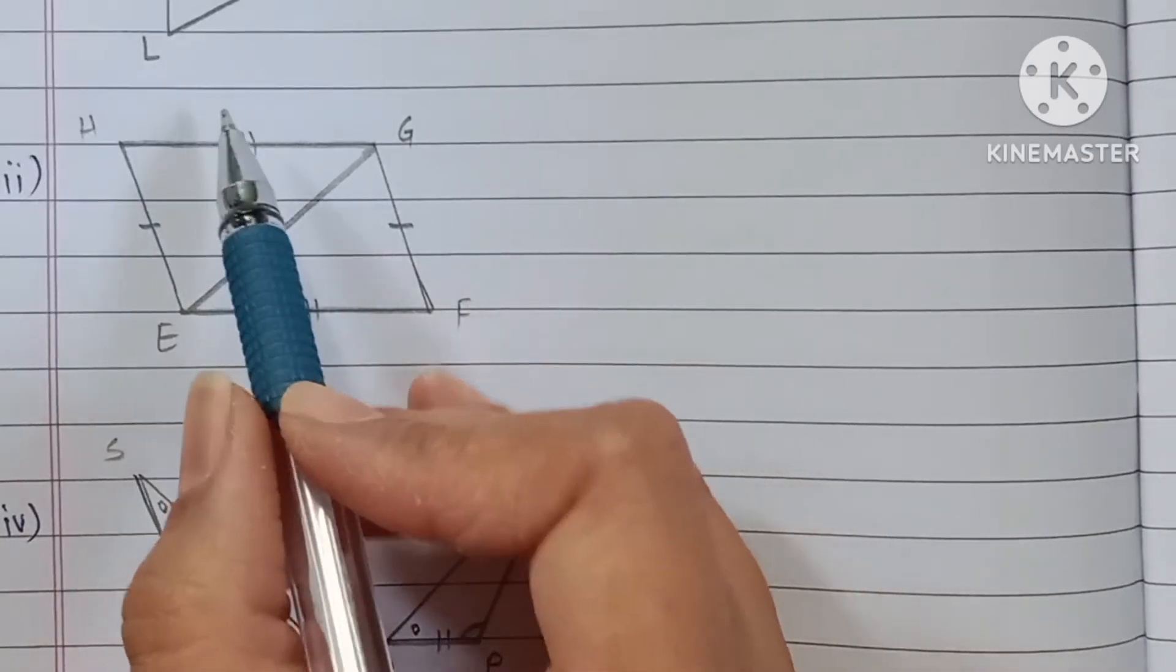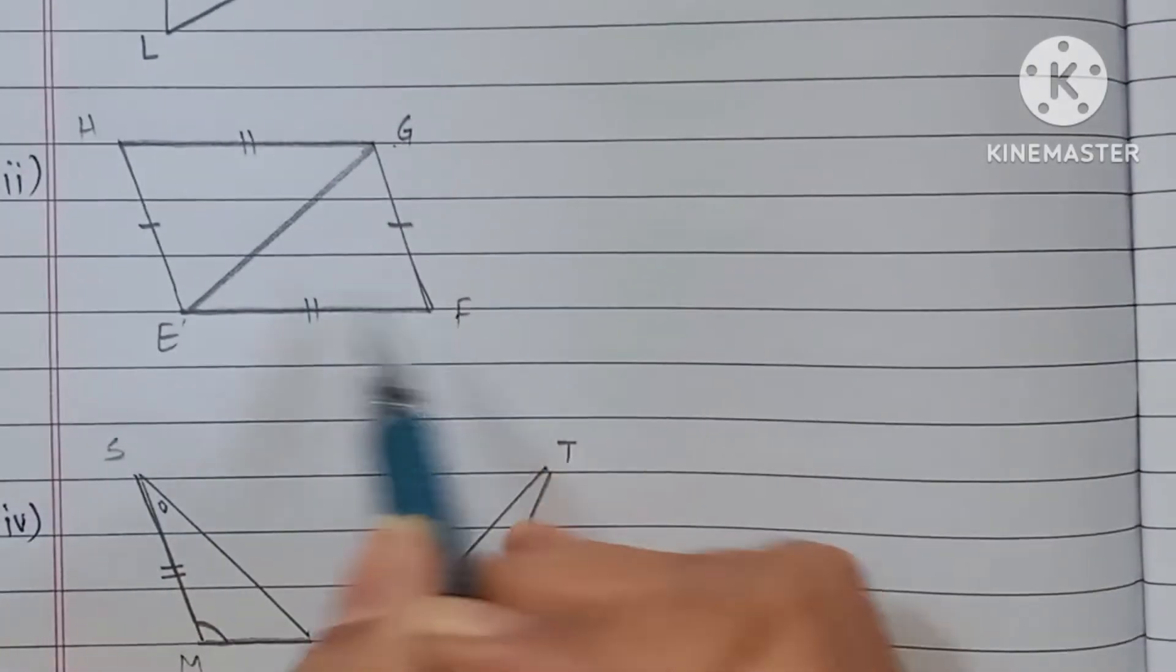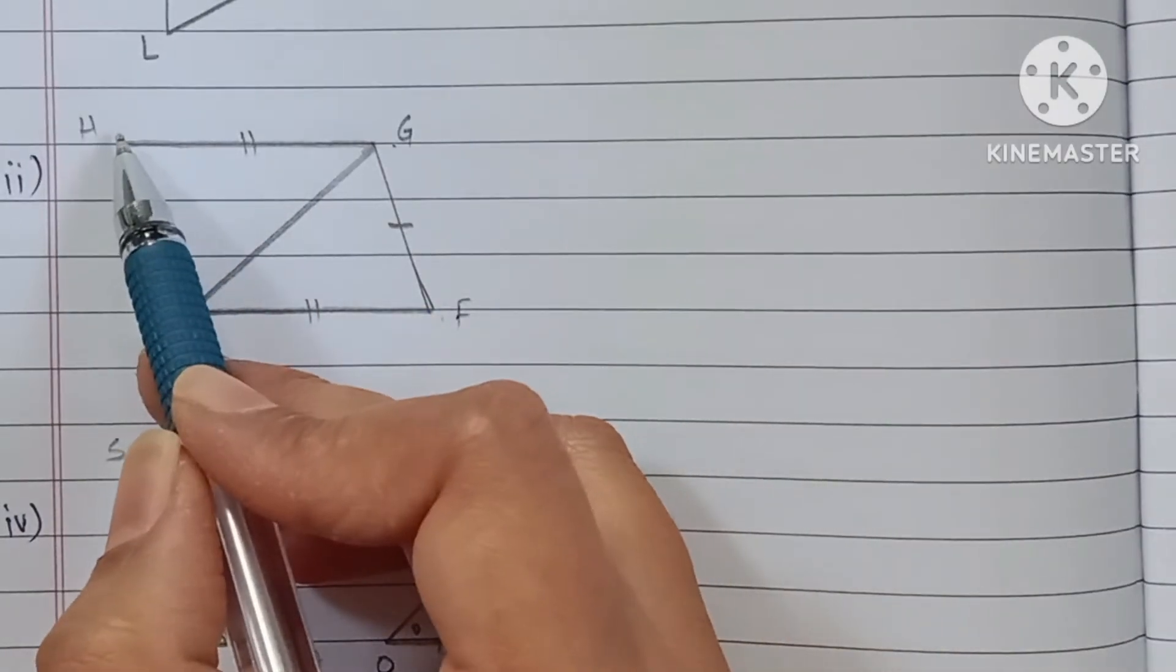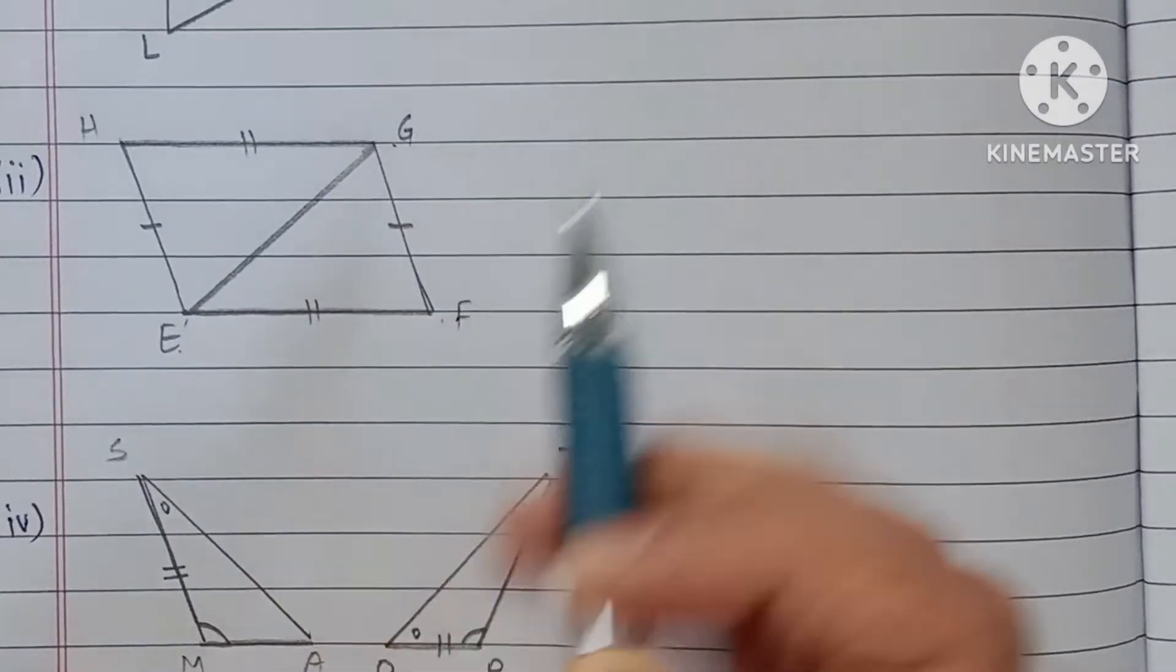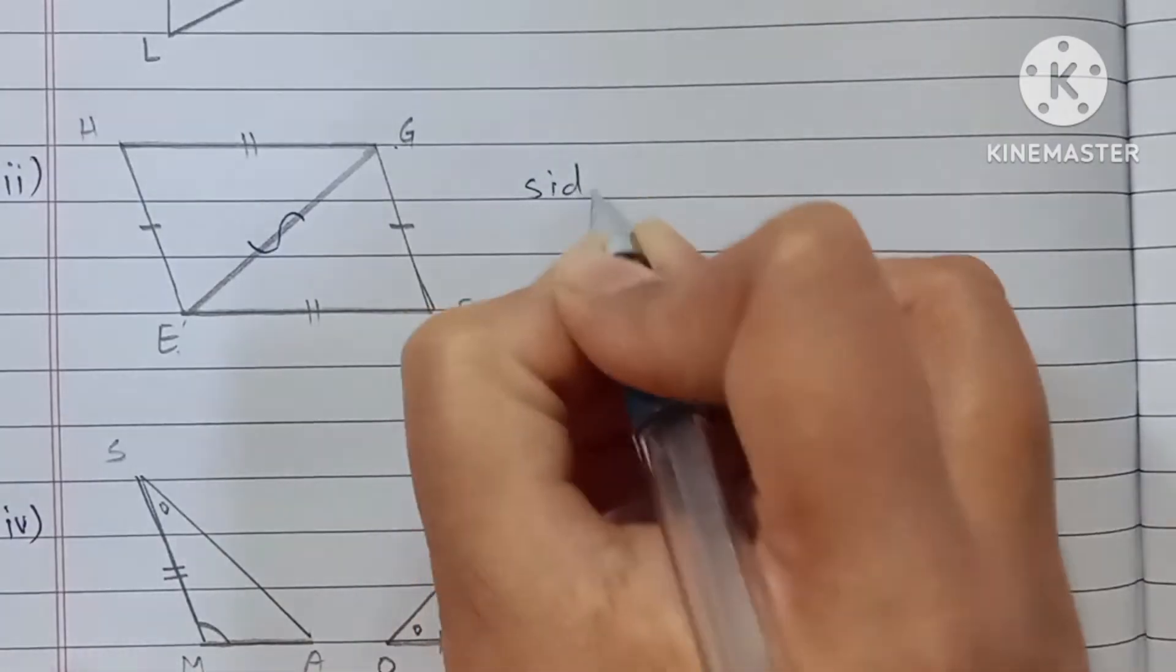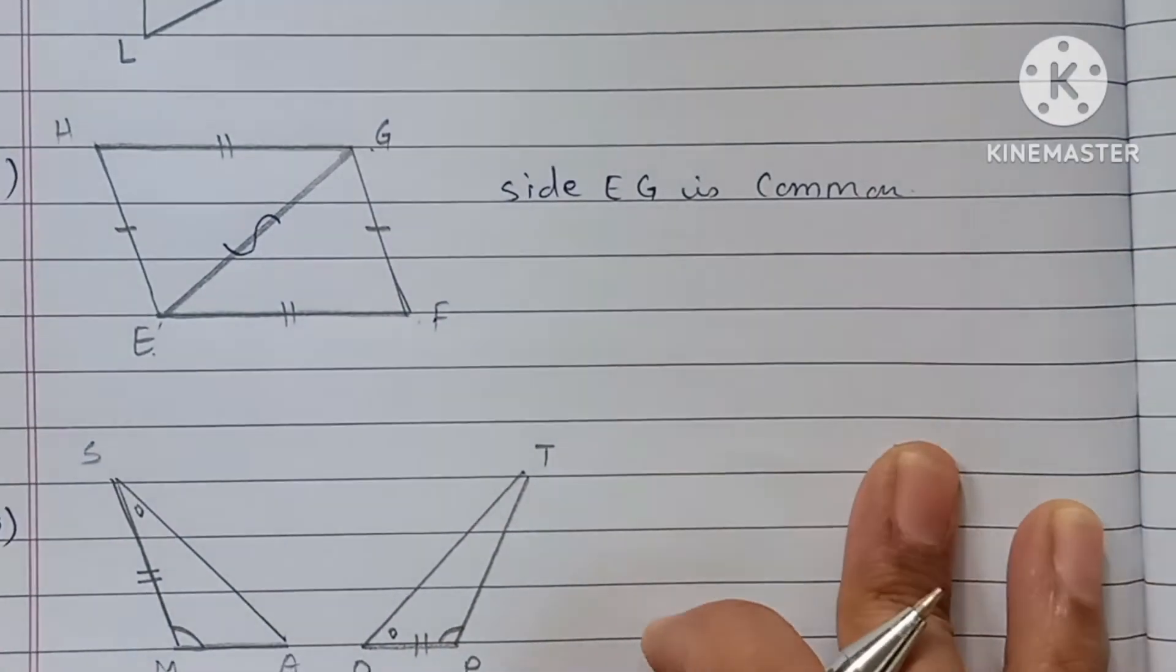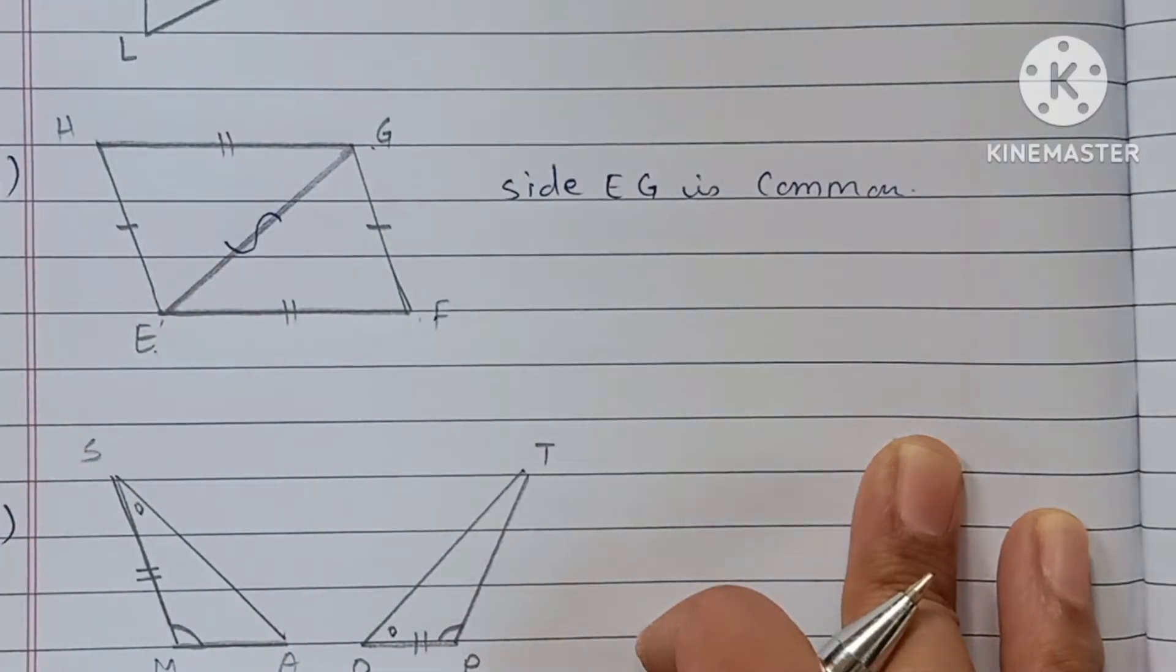Third one. Here triangle HEG and triangle FGE. See here, side HG and EF are congruent. HE and GF are congruent. And this side is common. Side EG is common. Means side-side-side test, SSS.